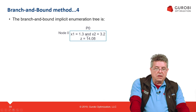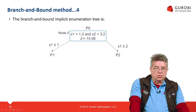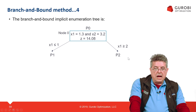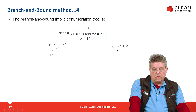Since we have fractional values, we perform branching. We choose the x1 variable to eliminate the fractional value. To do so, we add two new constraints: x1 less than or equal to 1, which defines a new problem P1 (P0 plus this constraint), and x1 greater than or equal to 2, which defines problem P2 (P0 plus that constraint).